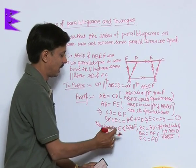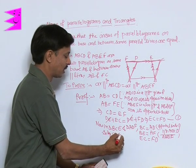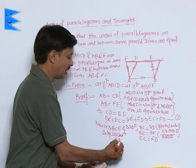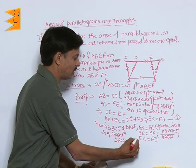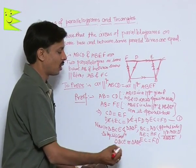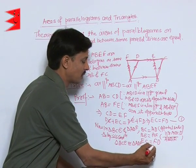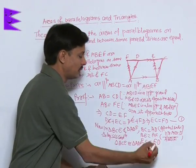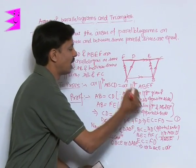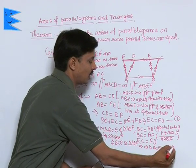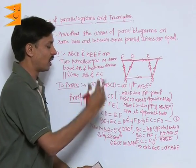The triangles are BCE and ADF. All three sides of triangle BCE are equal to all three sides of triangle ADF. By the SSS condition, triangle BCE is congruent to triangle ADF. This implies that the area of triangle BCE equals the area of triangle ADF, since congruent figures are always equal in area.